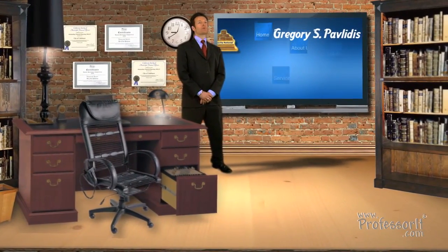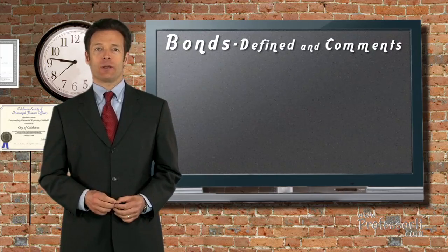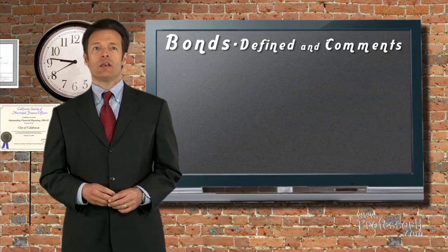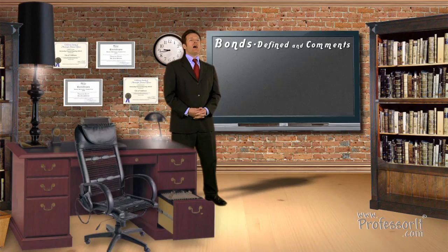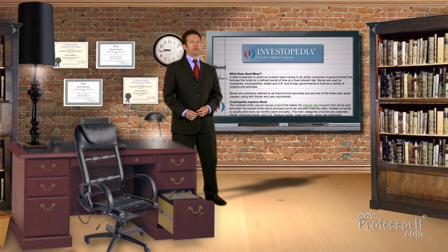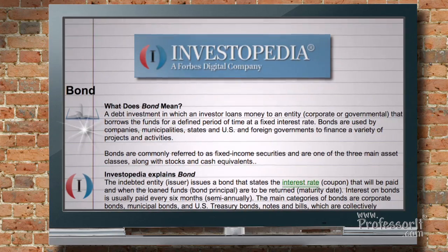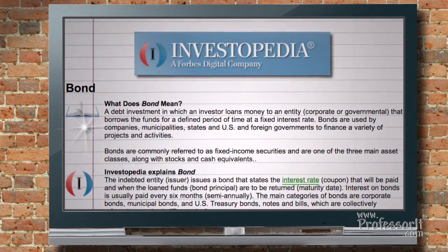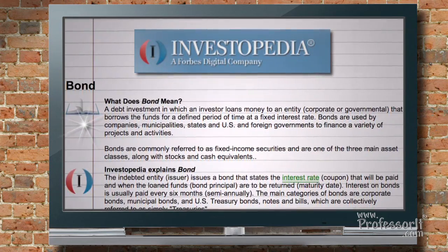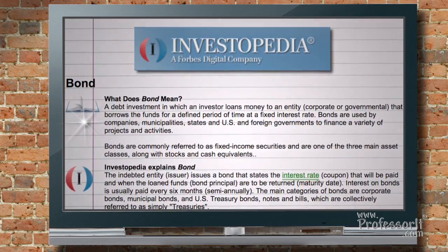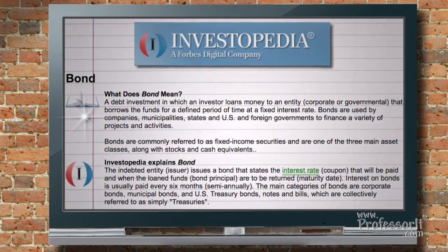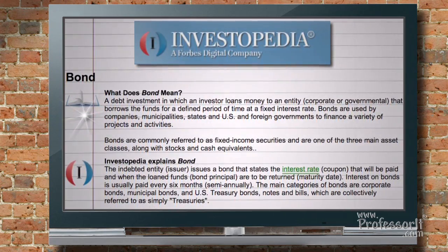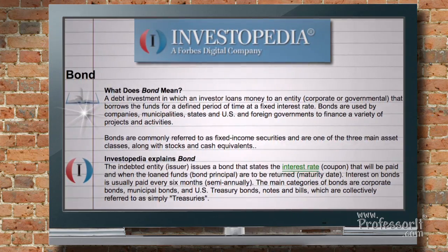Hi, this is Gregory Pavlidis with Professor at Dotcom, and today we're going to be talking a little bit about bonds, give it a definition, and I'm going to throw in a few comments about them. A bond is a debt investment in which an investor loans money to an entity, corporate or governmental, that borrows the funds for a defined period of time at a fixed interest rate.